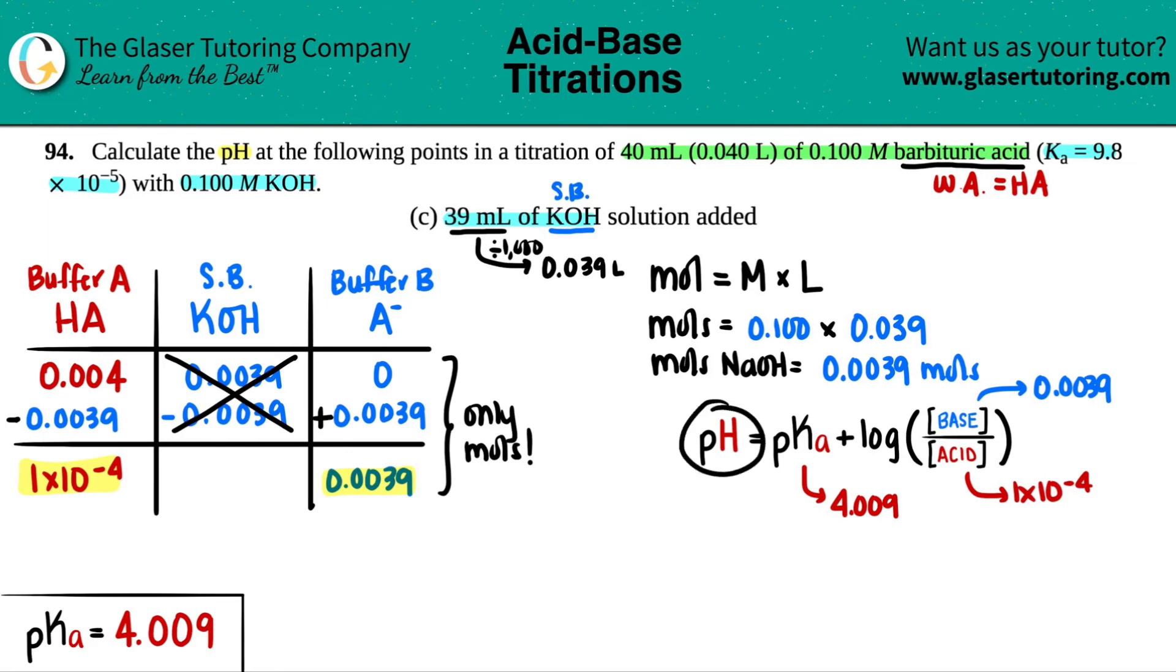Now let's figure out that pH. So pH equals 4.009 plus the log of that base divided by the acid: 0.0039 divided by 1 times 10 to the negative fourth. You could plug this all into the calculator at once. It should be able to understand what you're trying to do, but you could always do the log and then just add the 4.009. So log 0.0039 divided by 1 times 10 to the negative fourth, then plus 4.009. In this case, I get 5.60, and that's the new pH.